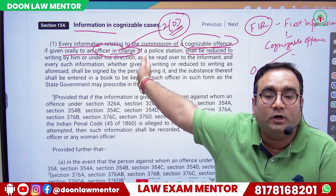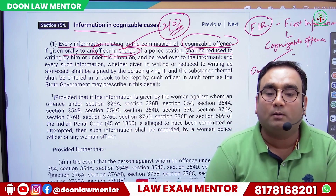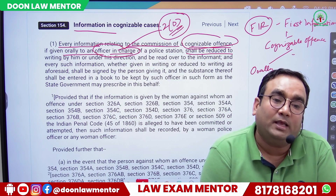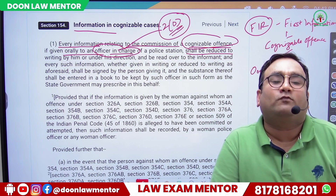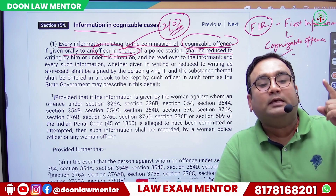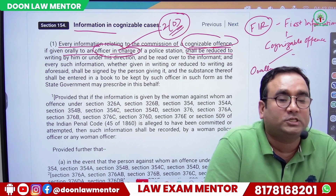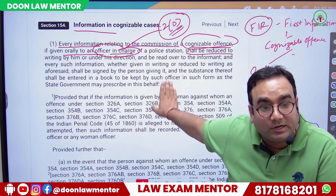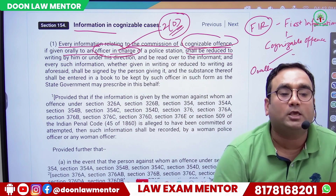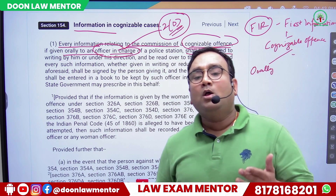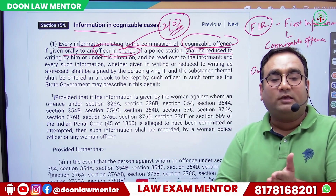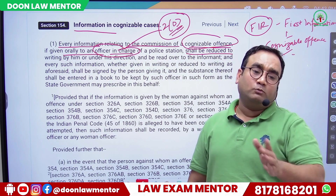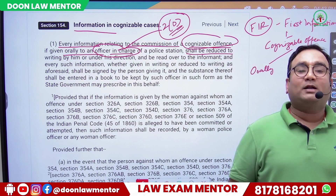Now a question arises — what about small police pickets, like in jungle areas between Dehradun and Mohand, where even a head constable may not be posted, only a police chowkidar? In such cases, CrPC provides that any person can be treated as officer in charge, but a special condition applies: the state government must specify so by notification. The general rule of CrPC is that below head constable rank cannot be designated as officer in charge, unless the state government has issued a notification allowing even a constable to serve as officer in charge.